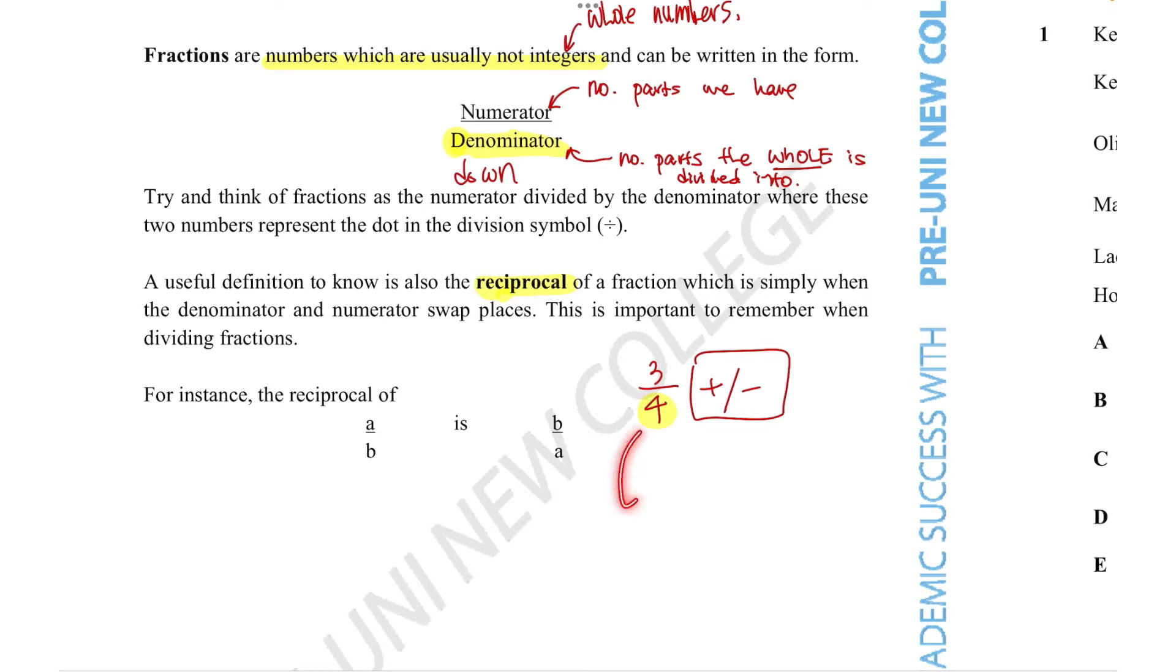So for example, going back to the 3 over 4, the reciprocal would just be 4 over 3. Now you ask, why is this relevant? Why is this important?